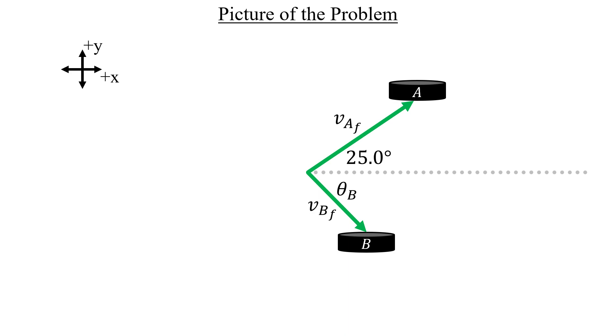The special property that we need to know about in order to solve the problem is this. Whenever two objects of equal mass collide elastically and one of them is initially at rest, their final velocities are always perpendicular to one another. Let me prove to you why that is.